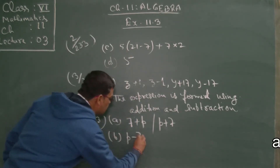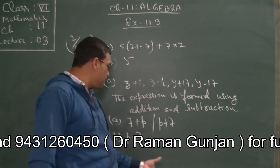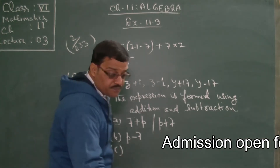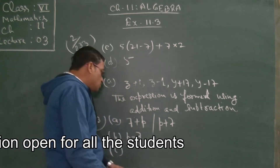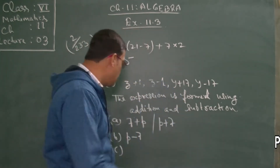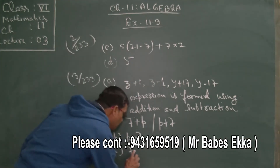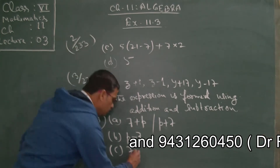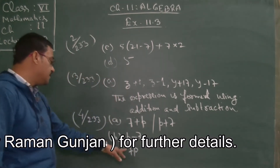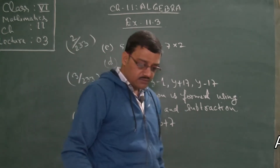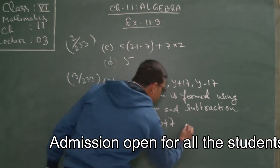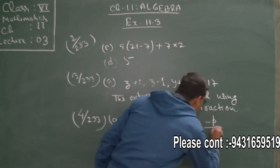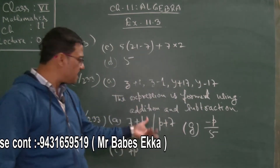For option B: '7 subtracted from p' — so it will be p minus 7, because 7 is subtracted from p. For option C: 'p multiplied by 7' — in algebra we don't write the multiplication sign, and the constant term appears first, so we write 7p. For option G: 'minus p divided by 5' — so we write minus p by 5. In this way you can write the expressions.